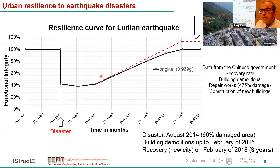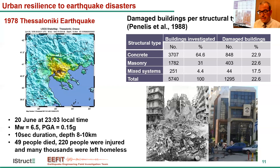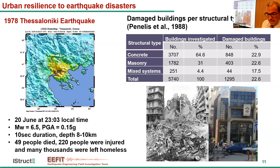Let's discuss the development of the city-wide model. This refers to Thessaloniki, a city in northern Greece. It was hit by an earthquake on the 20th of June 1978 at night — magnitude 6.5, PGA 0.15g — and almost 40 people died, 220 were injured, and many thousands were left homeless. Thessaloniki mainly has concrete buildings in the center. Based on the work of Penelis et al., the majority of buildings in the metropolitan area were damaged or heavily damaged, with some collapse cases.